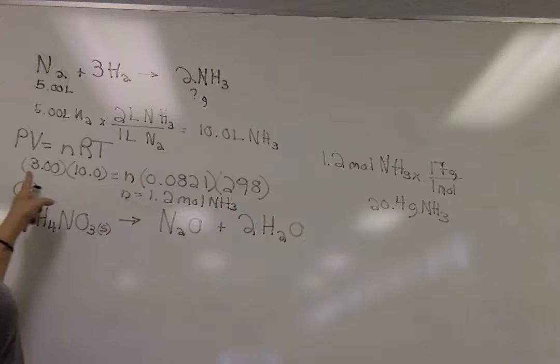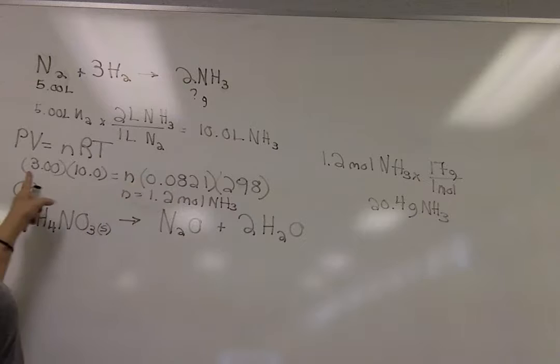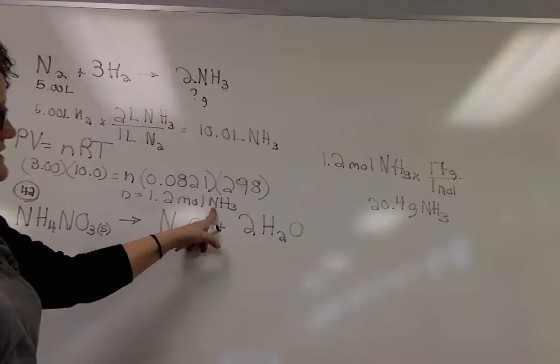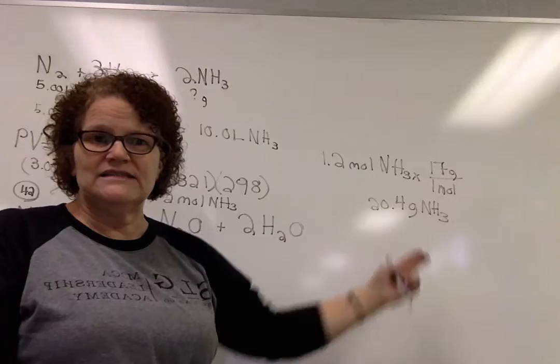And then we put the liters of NH3 into the ideal gas law so we could solve for moles. And then we just did what we always need to do, which is to take the moles and use the molar mass to find the mass that we can—that we have of the ammonia.